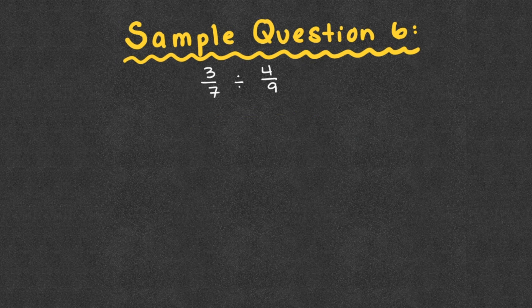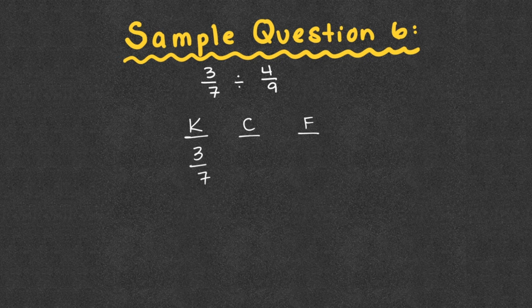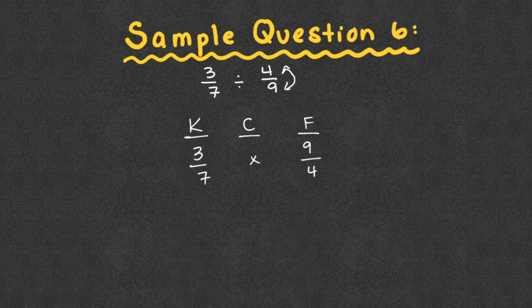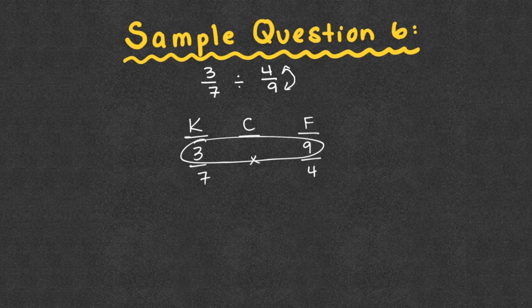Let's move to our division sample questions. Following KCF: I keep my first fraction, three-sevenths. Change the division sign to multiplication. Both fractions were already proper, so nothing to convert at the beginning — nine-fourths flips and becomes four-ninths. Looking diagonally, three and four share only a factor of one; seven and nine share only one. Multiply straight across: three times nine is 27, seven times four is 28. Answer: twenty-seven twenty-eighths.